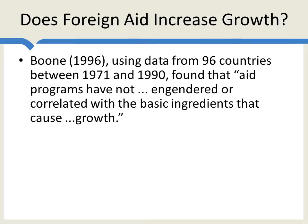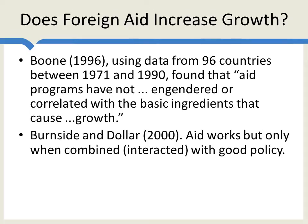This led to a lot of debate, with many different papers going back and forth. The debate seemed to be resolved by the Burnside and Dollar paper, which sort of split the difference. It said overall aid does not work, but when aid is combined with good policy, it does work. So when a country gets its act together — opens its borders, reduces corruption — then is the time that aid works. This made both sides of the debate happy, and it suggested a policy direction: that we ought to tie aid to making policy better.